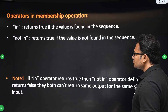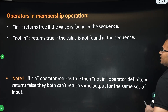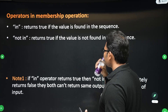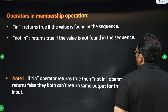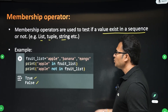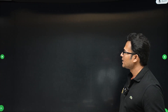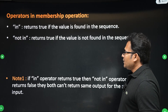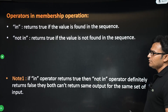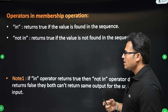The operators in membership operation are 'in' and 'not in'. 'in' returns true if the value is found in the sequence. 'not in' returns true if the value is not in the sequence. These two are mutually exclusive — if one is true, the other will be false.